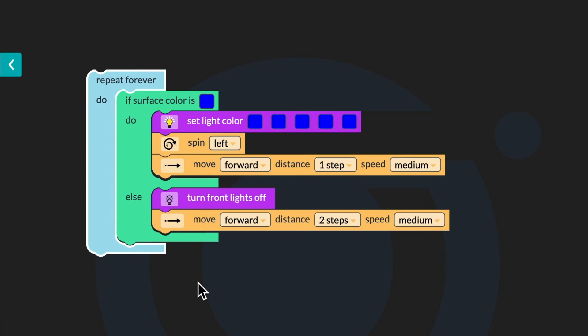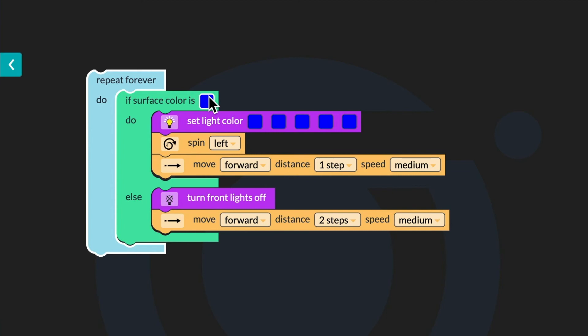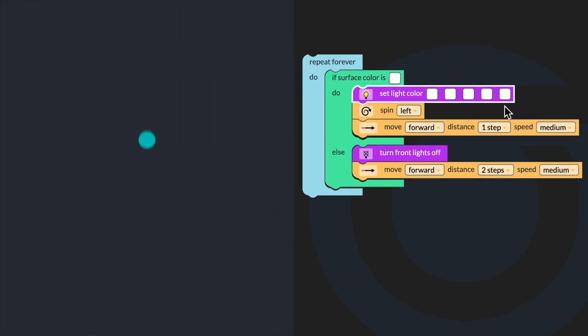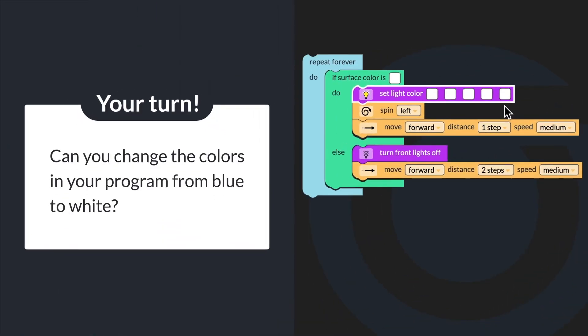First, click on the blue square in the if surface color is block and change it to white. Then click on the five blue boxes in the set light color to block and change them to white. Can you change the colors in your program from blue to white?